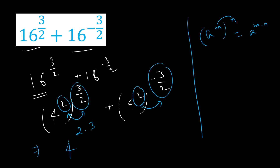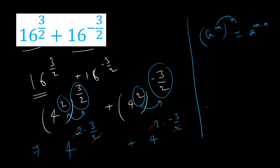So from here we get 4 raised to the power 2 into 3 by 2, and 4 raised to the power 2 into minus 3 by 2. We cancel out the 2s, giving us 4 raised to the power 3 plus 4 raised to the power minus 3.